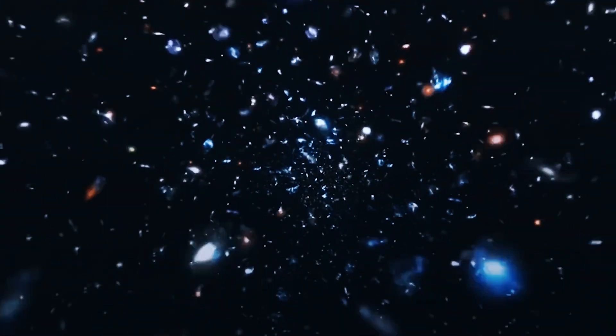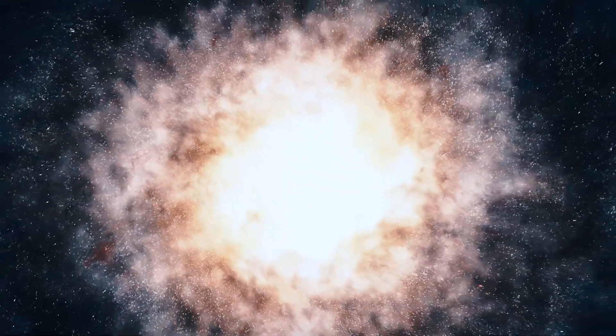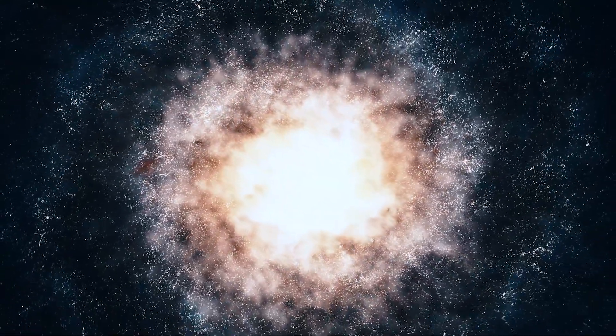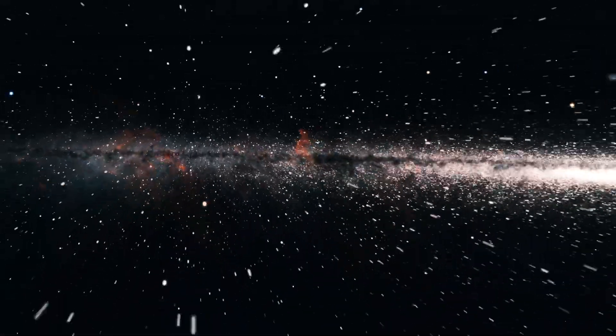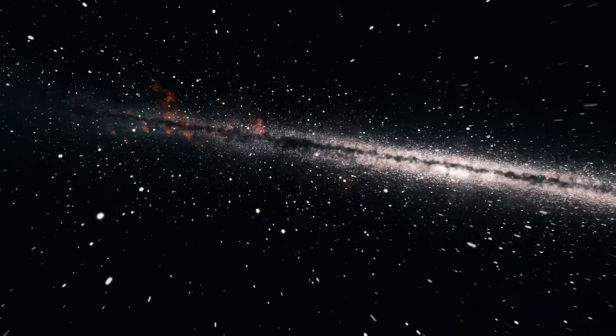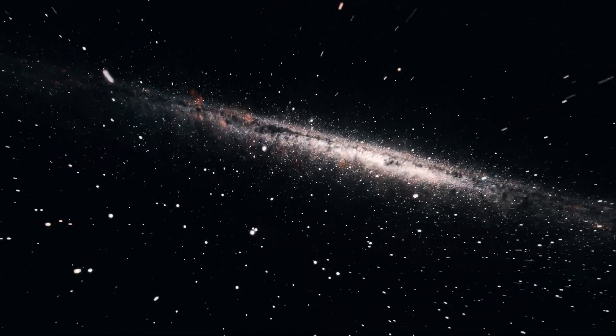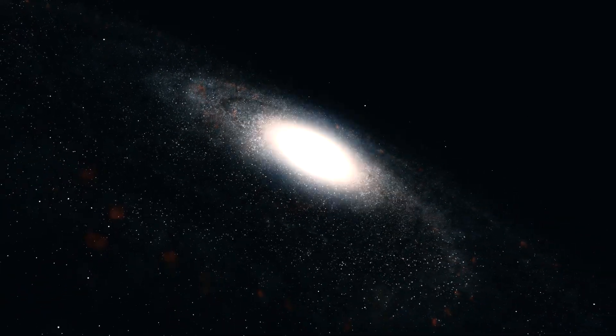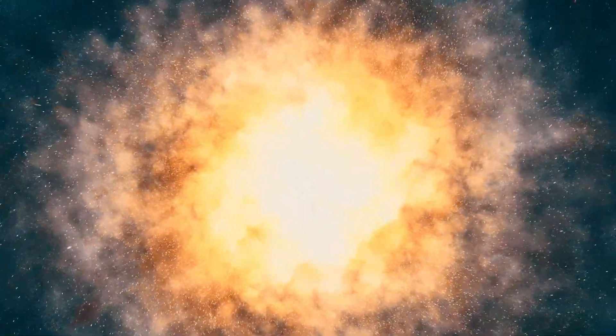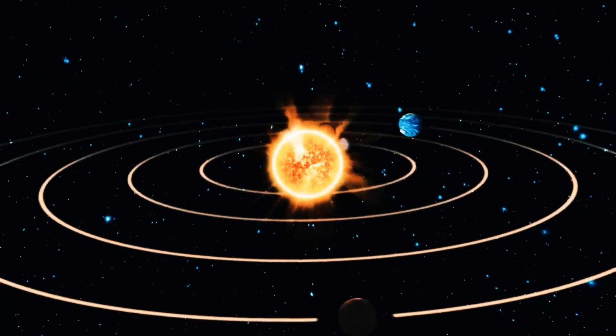We can apply a similar analogy to galaxies. If we assume that the bright part of a galaxy shows where most of the mass is, then most of the mass is near the center, and at the dim edge of a galaxy, there should not be much mass. Therefore, objects orbiting far from the center of the galaxy should move slower than objects closer to the center, just like the planets in our solar system.